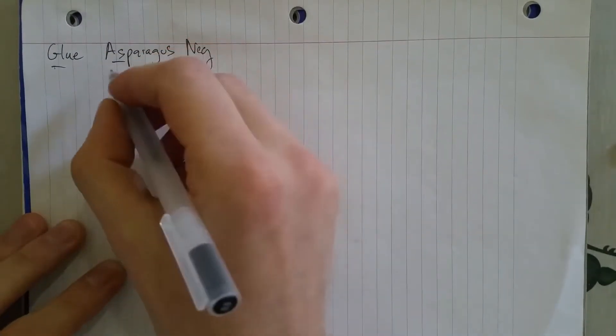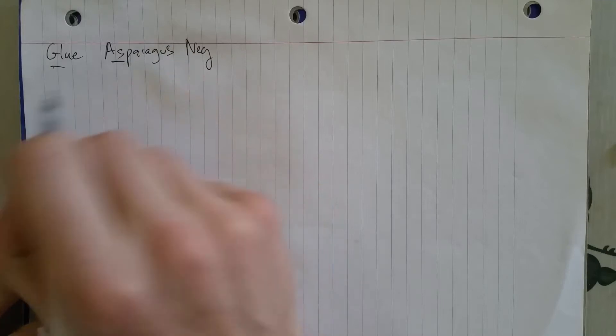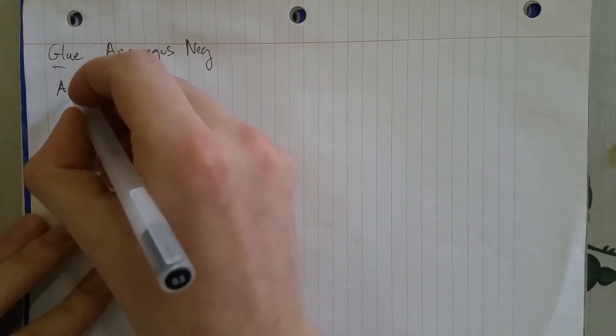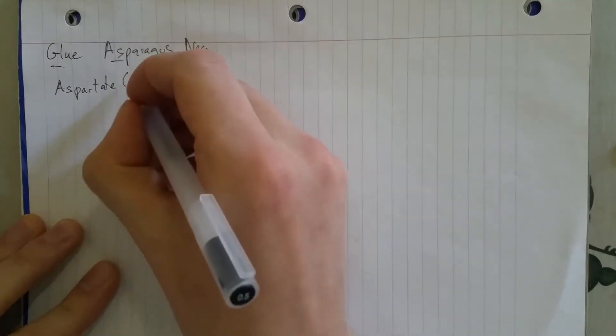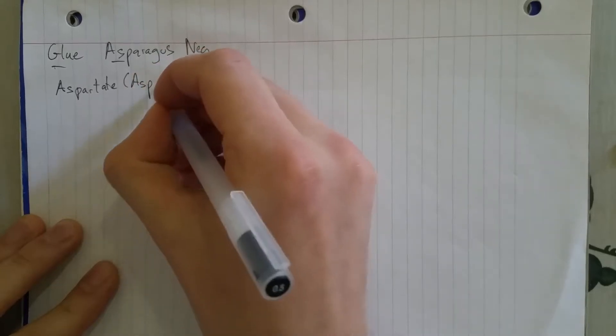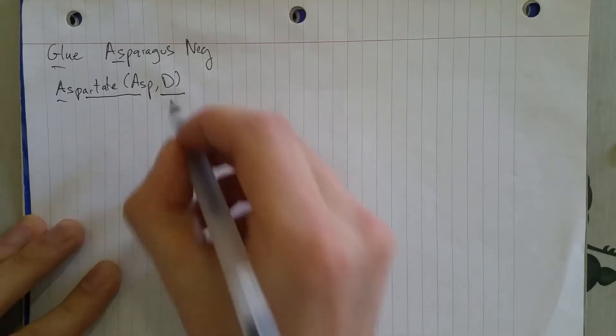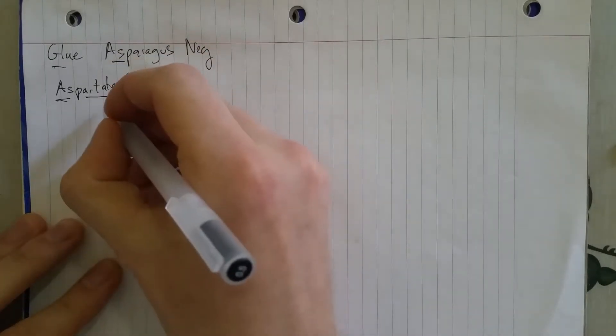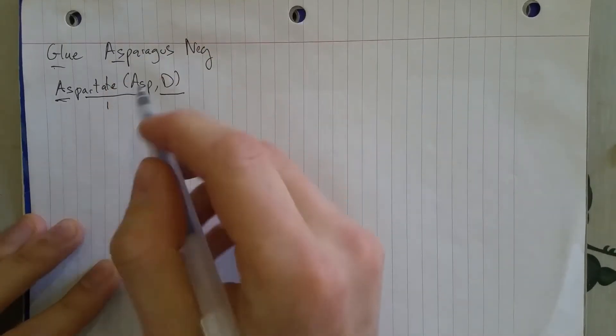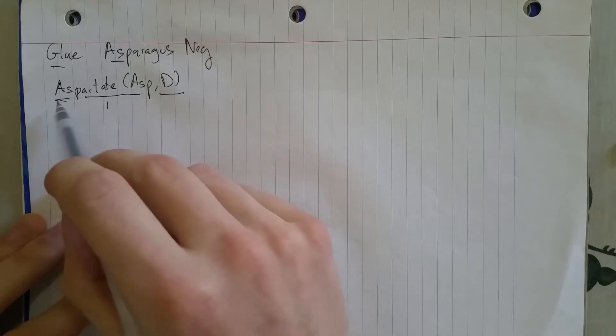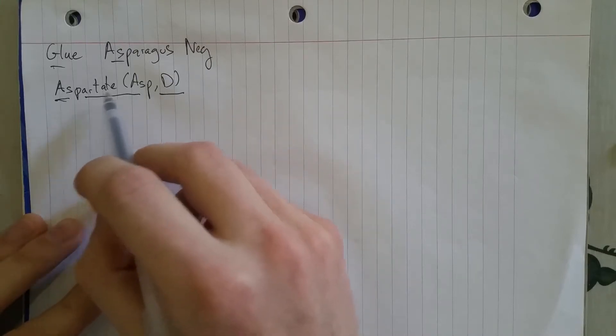Okay, so asparagus, we're gonna do asparagus first, A before G in the alphabet. Asparagus reminds us of aspartate. And aspartate was actually discovered studying asparagus. So, a little bit of trivia for you there. ASP makes sense, the D, I guess you could think of mispronouncing it, aspartate or something.